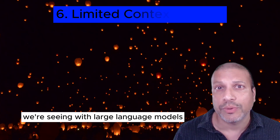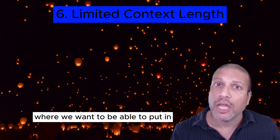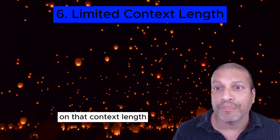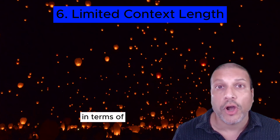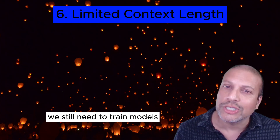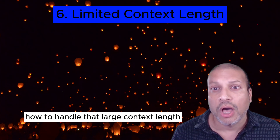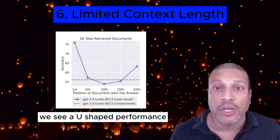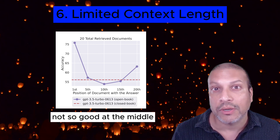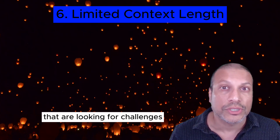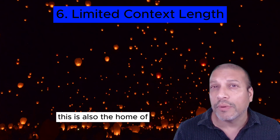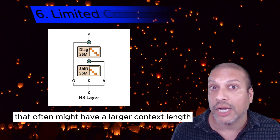Limited context length is another challenge — we want to put lots of information into a prompt, but the models are limited on context length. We've started making architectural improvements to handle longer context lengths, but the challenge is that models still need to be trained to understand how to handle them. Often what we see is a U-shaped performance: when there's a large context length, the model does well at the beginning and at the end, but not so well in the middle. Positional embeddings and alternatives to transformers are areas being explored to address this.